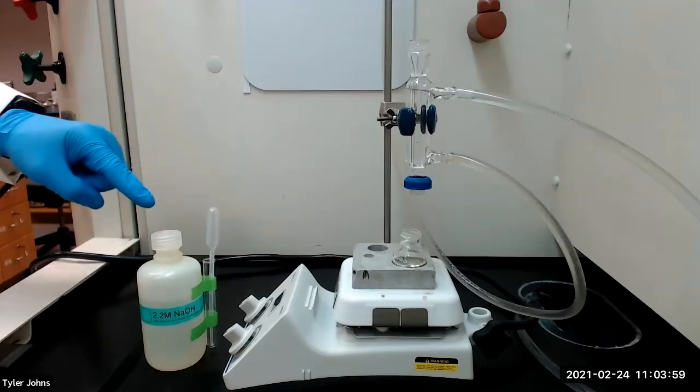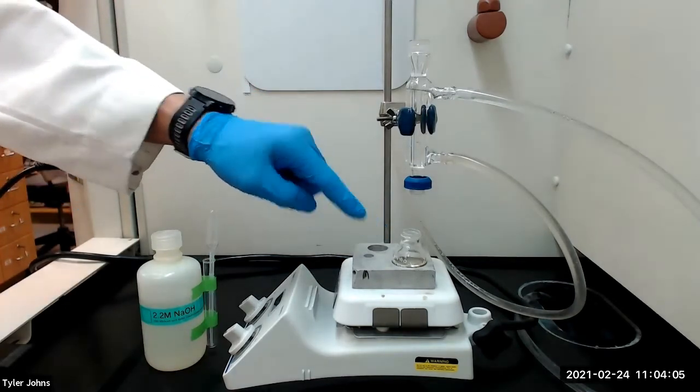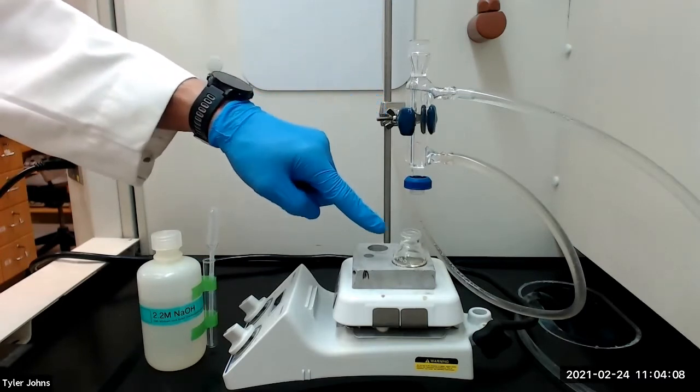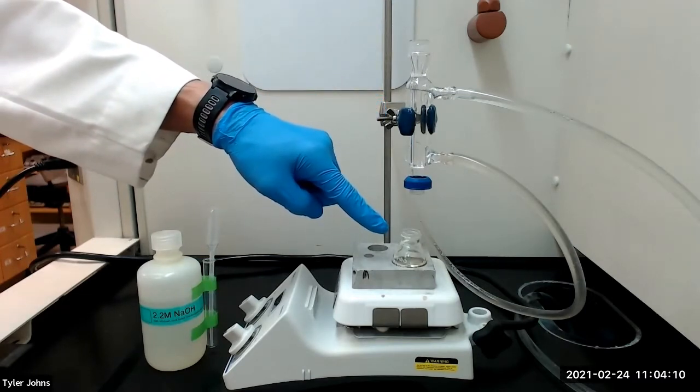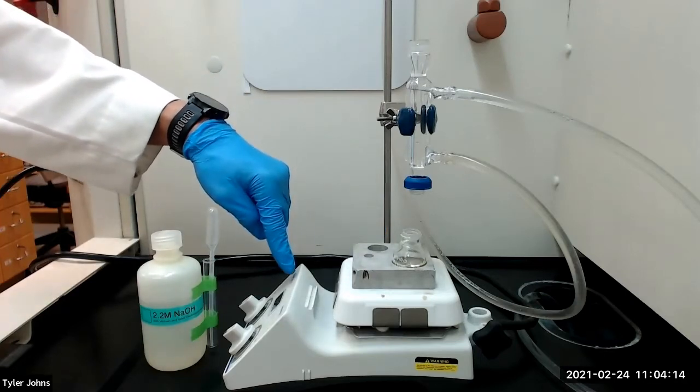We will next add 0.25 milliliters of 2.2 molar sodium hydroxide solution to the mixture. We will then attach a water-cooled condenser to the 10 milliliter round bottom flask and heat the mixture to reflux using an aluminum block and a hot plate.